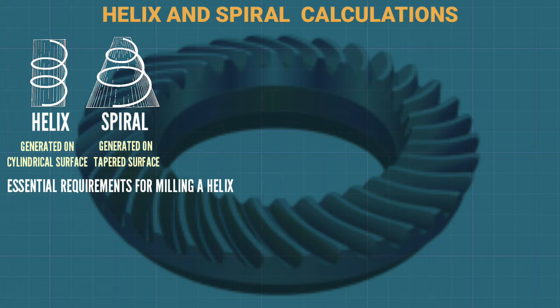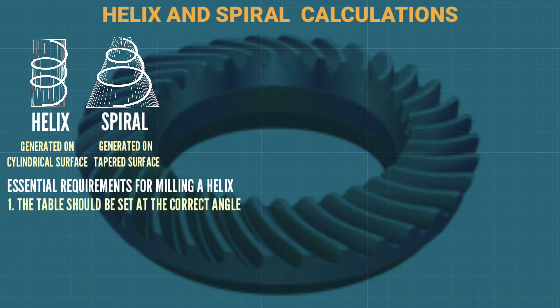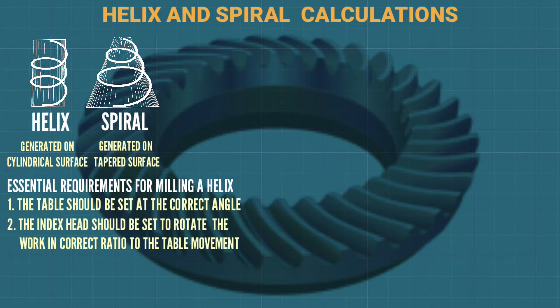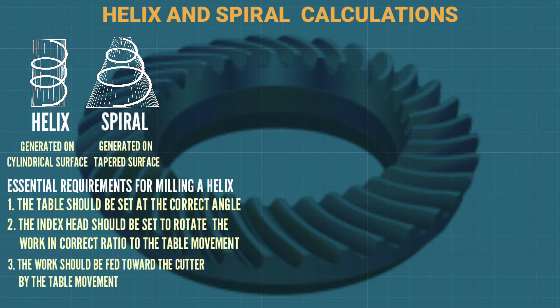The essential requirements for milling a helix: first, the table should be set at the correct angle; second, the index head should be set to rotate the work in the correct ratio to the table movement; third, the work should be fed toward the cutter by the table movement.